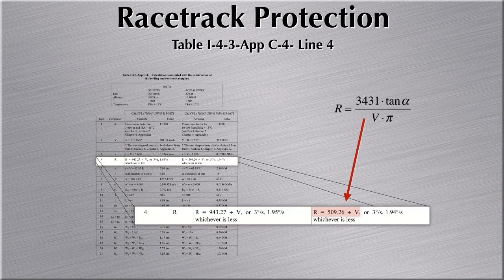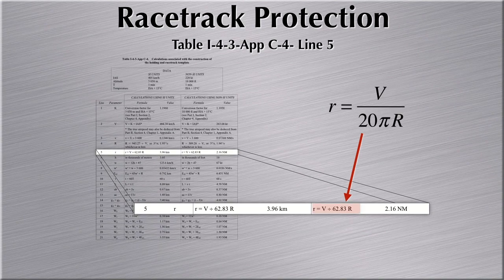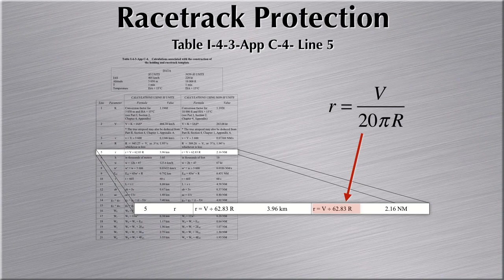Line 4 then calculates the rate of turn. Don't be put off by the format of the formula in that line — it is the usual rate of turn formula from your basic training. The only thing is that somebody already calculated 3431 times the tangent of 25 degrees. As usual, we are limited to a standard rate one turn. So if the calculated rate results in a value greater than 3 degrees per second, use 3 degrees per second as the maximum. If the calculated rate is 3 degrees or less per second, you can use the calculated value. And again, the formula has a slightly different format because somebody already calculated 20 pi in this line.